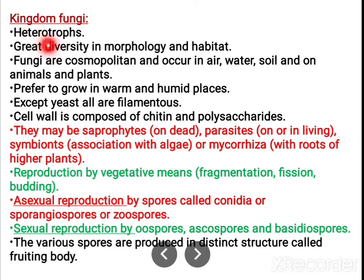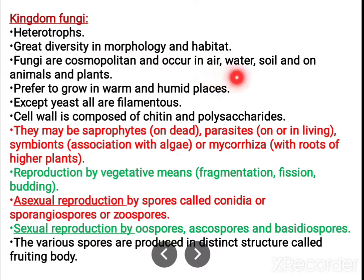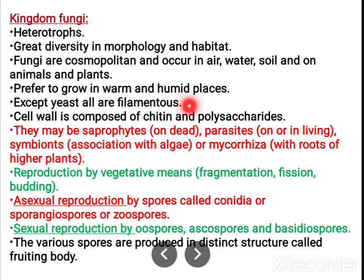The kingdom fungi mostly include heterotrophs. They show great diversity in morphology and habitat. They can live in air, water, soil, and can be upon animals and plants as parasites also. Normally they prefer to grow in warm and humid places.